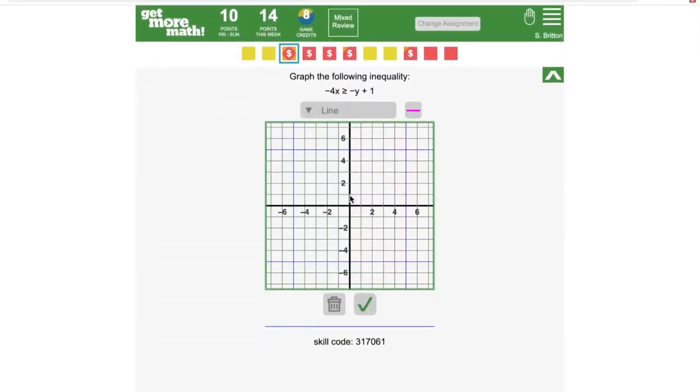When graphing inequalities on a coordinate plane, first graph the equation that you're given as usual. Then you'll need to decide whether to use a solid line or a dotted line. You can switch between solid and dotted by clicking on the box above the graph on the right.